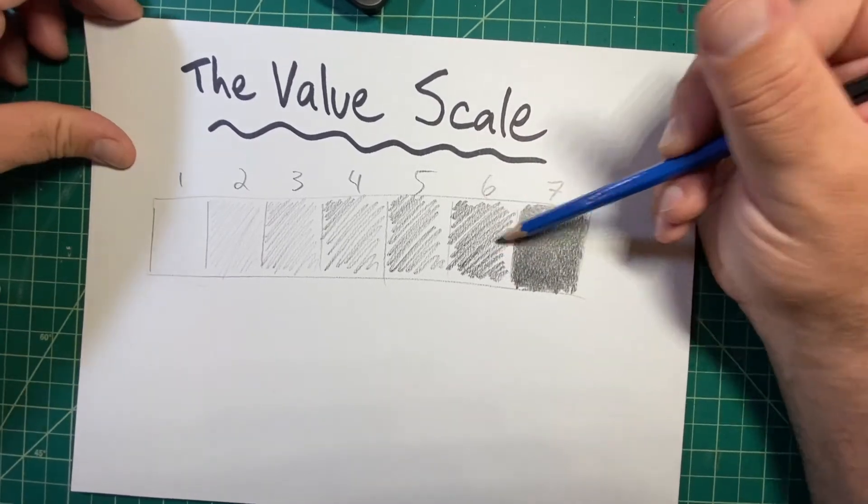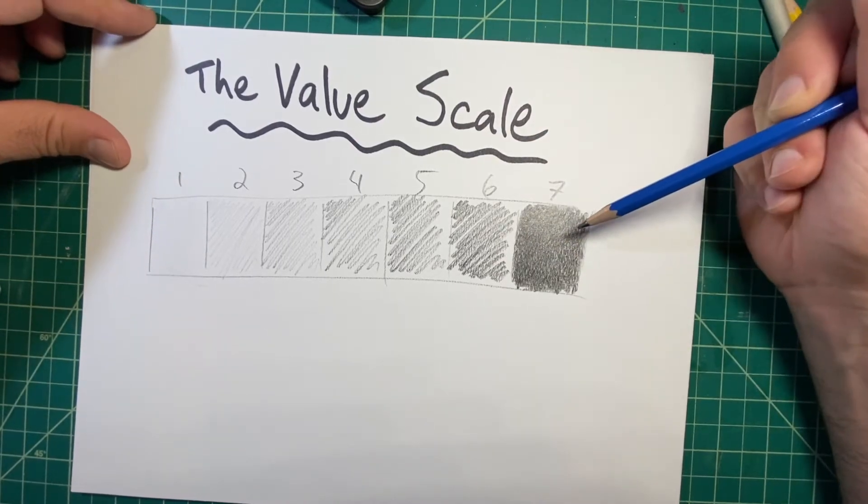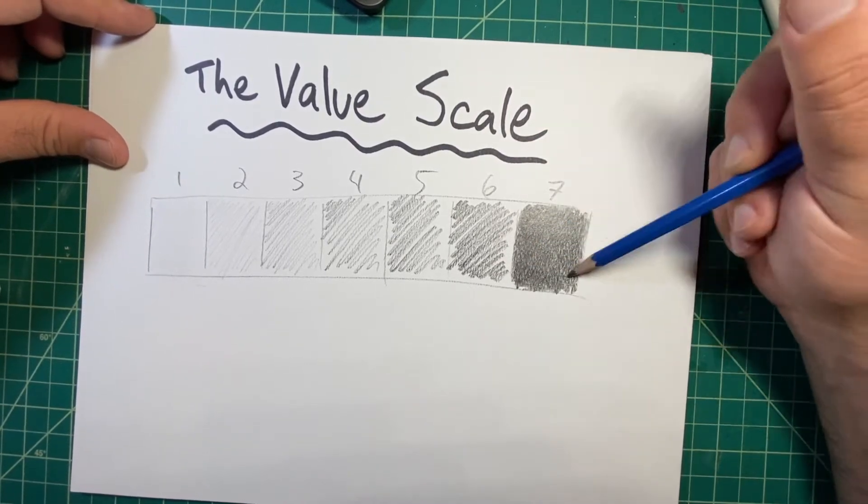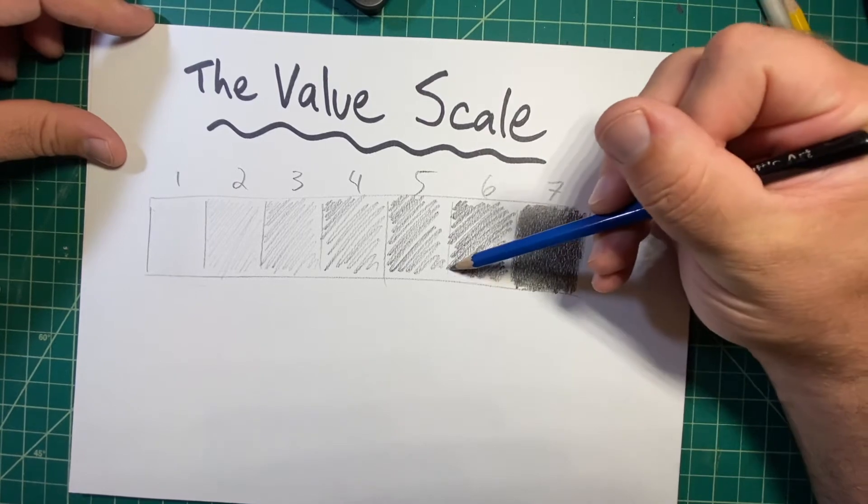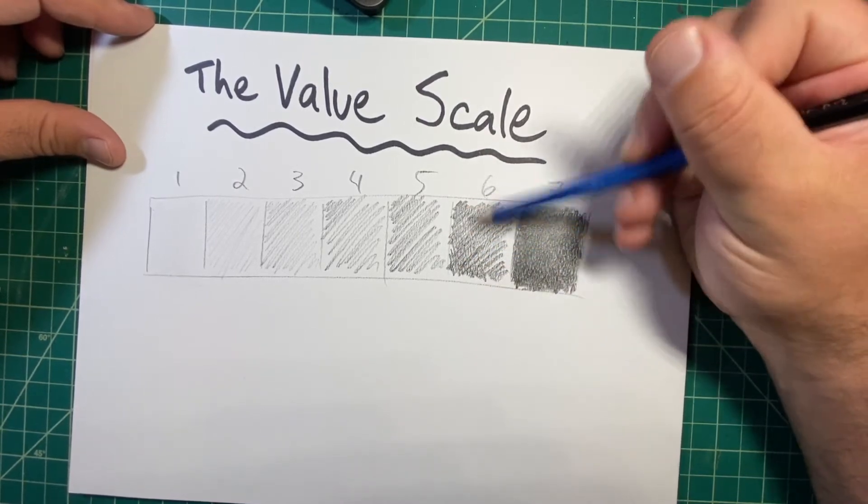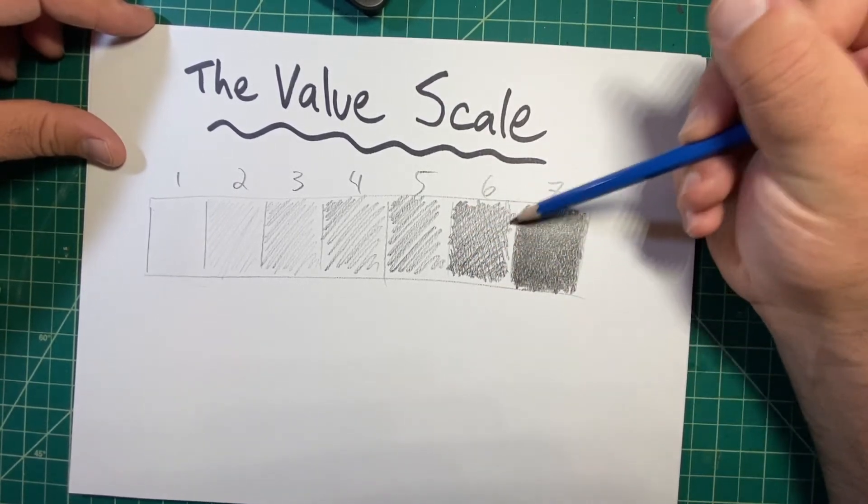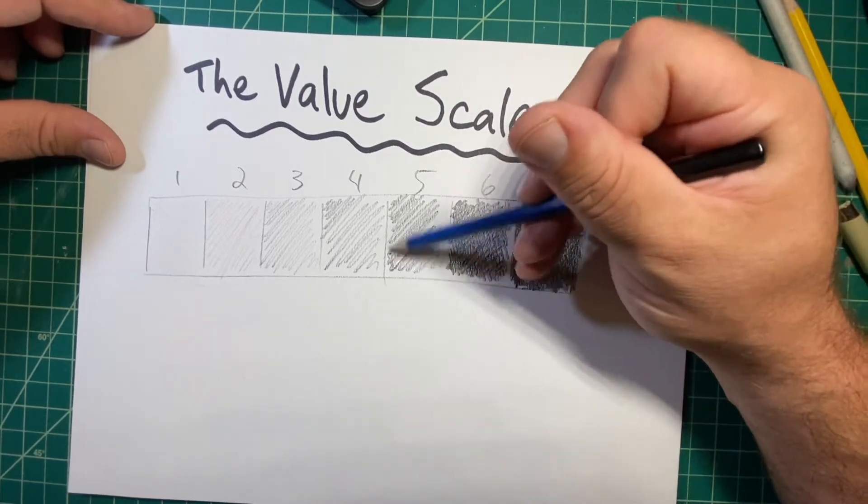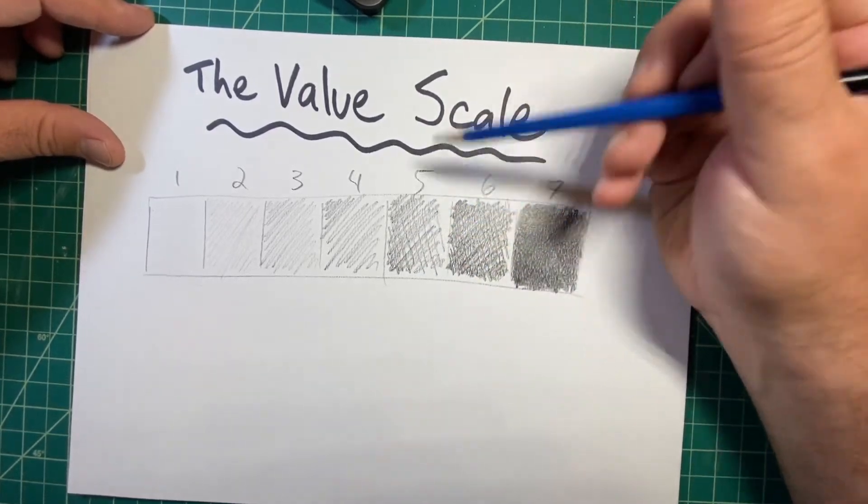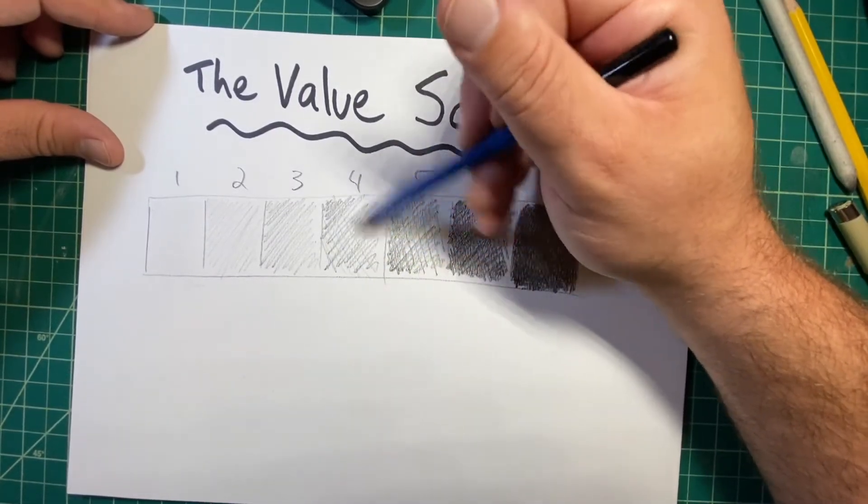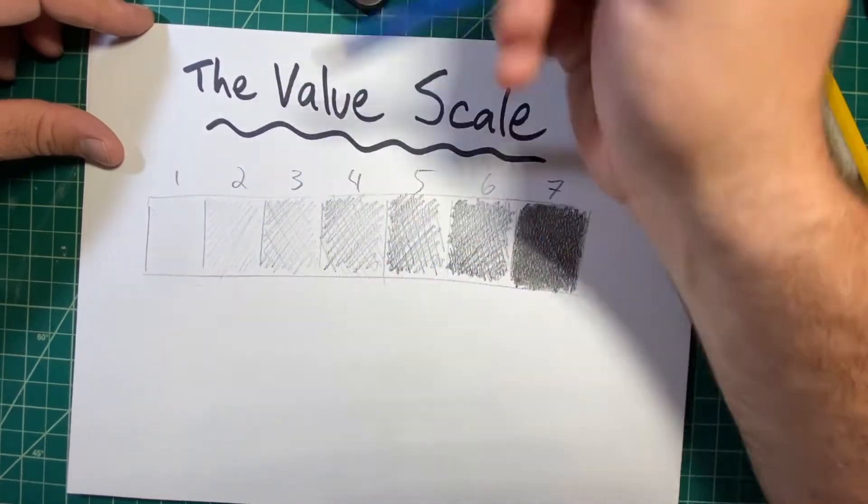However, to make it seem even closer to the seventh value here, I'm going to go over it one more time. So I'm going to press a little bit more, changing directions. I'll do that for each of them here. Four. Again, I'm pressing really light, and so on.